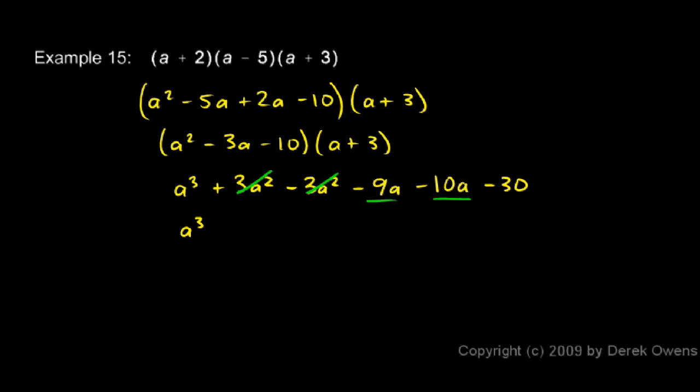I have negative 9a and negative 10a. Those combine to give me negative 19a. And then I have the negative 30 on the end, which sticks around. And that's my answer. All the like terms have been combined. a cubed minus 19a minus 30.